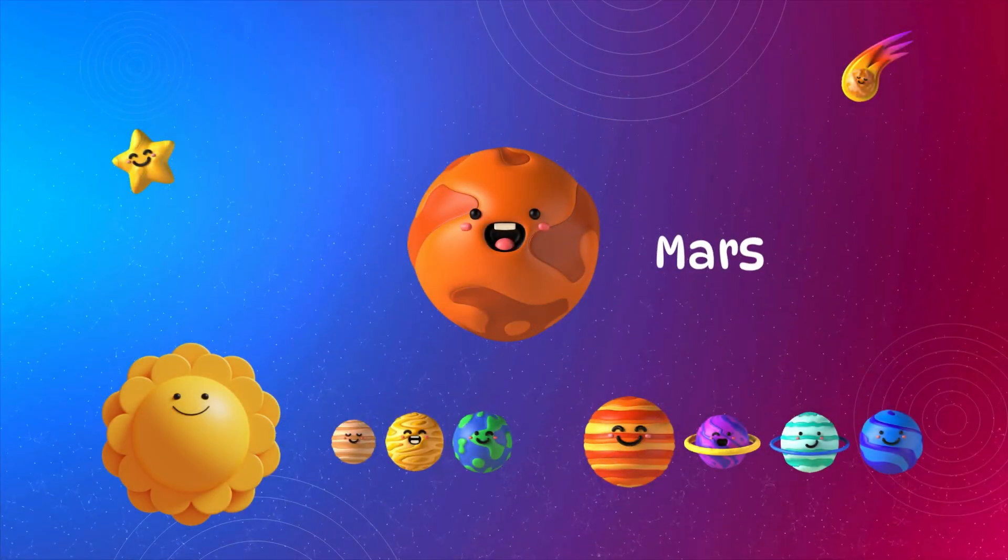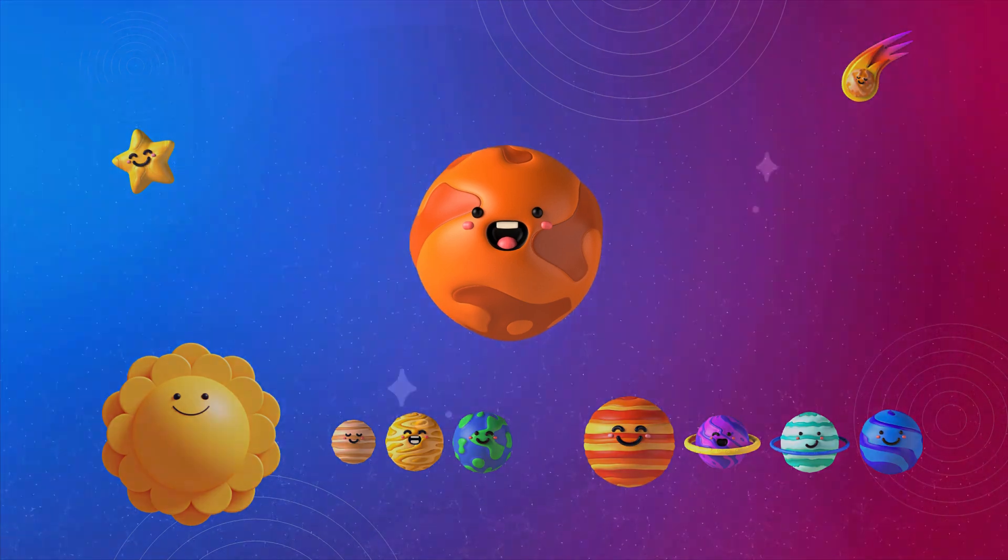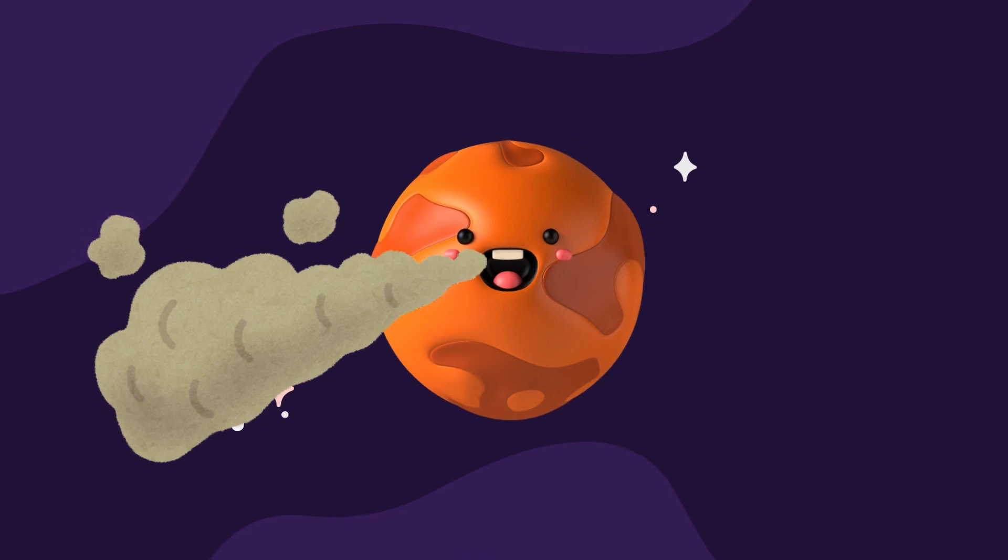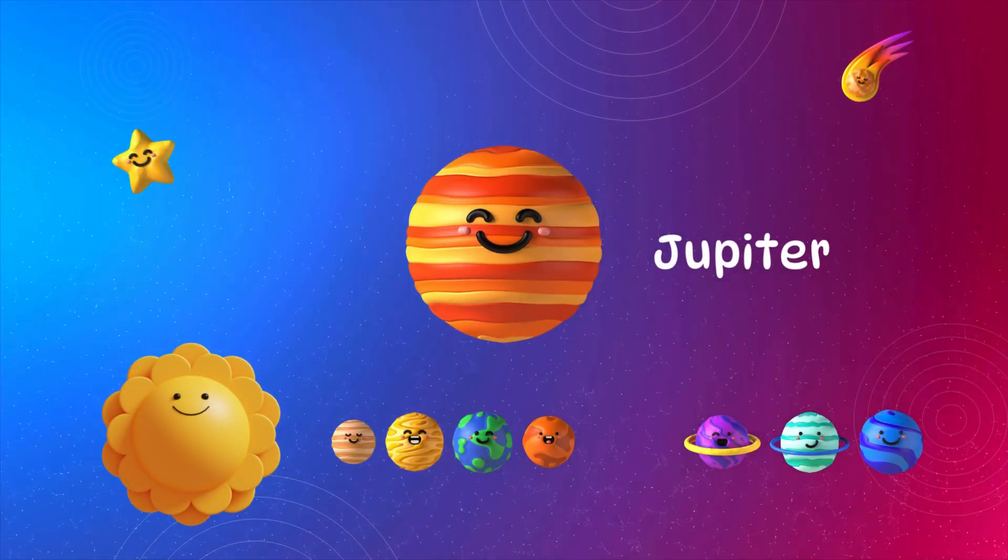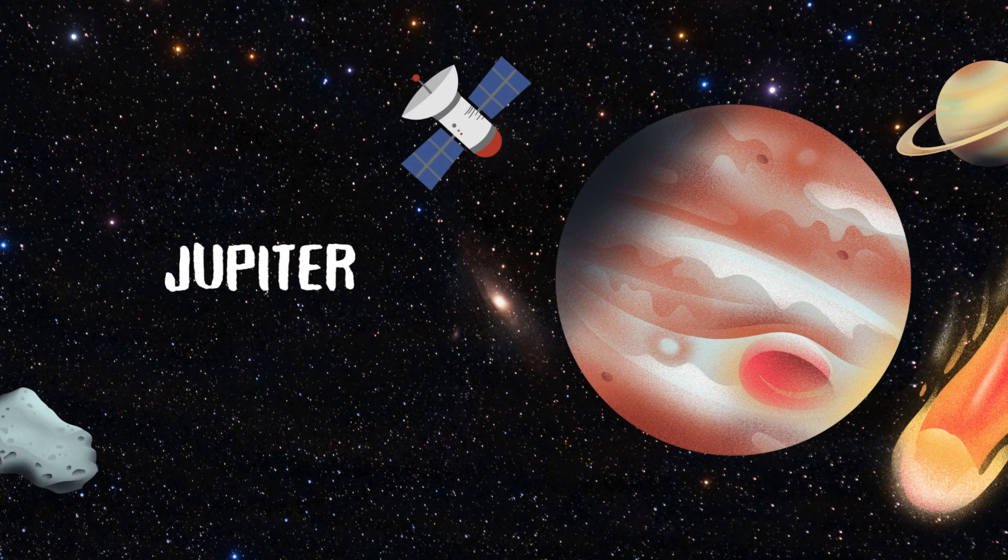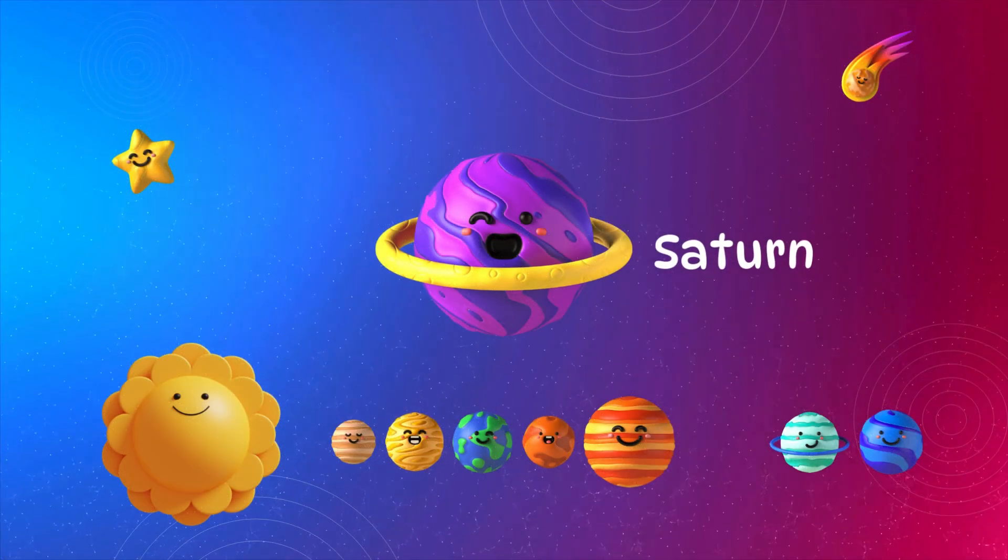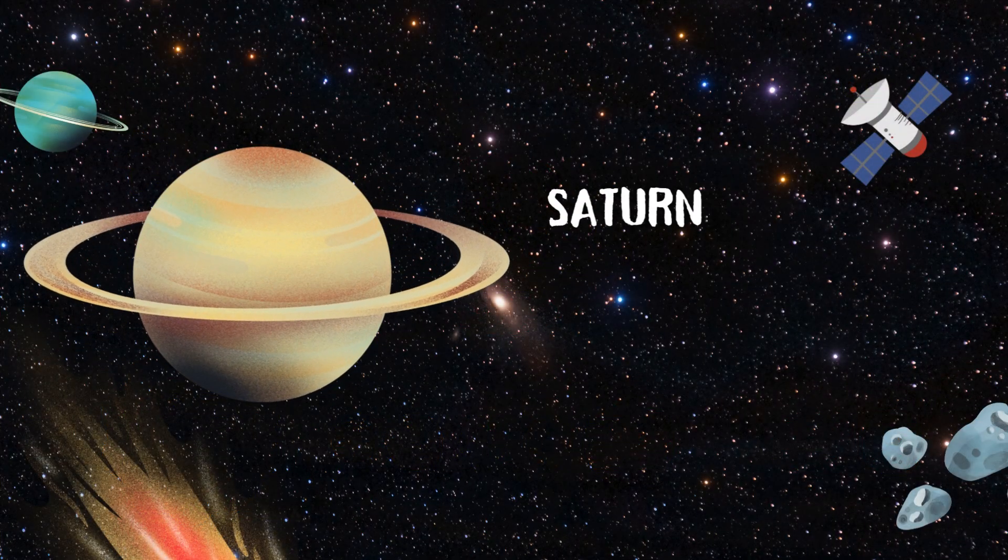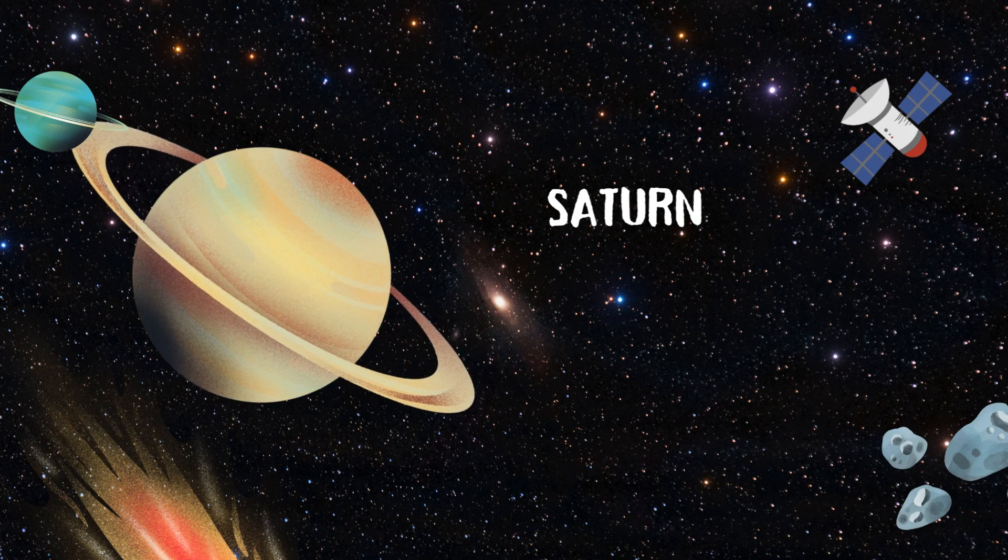Day and night. Mars is red with mountains tall, dusty storms and rocks so small. Jupiter's big with a giant red spot, a swirling storm that's really hot. Saturn's rings go round and round, the coolest sight we've ever found.